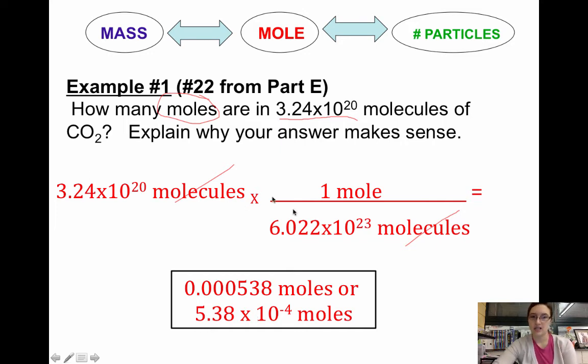If you need help putting this in your calculator, just make sure that you ask. Now this answer should make sense because this number of molecules up here is less than Avogadro's number. This times 10 to the 20 is less than times 10 to the 23rd, so our answer should be less than 1 mole, and it is.